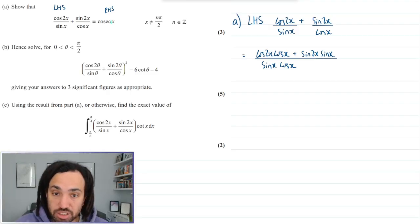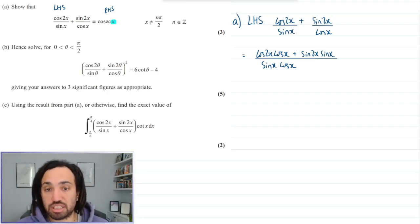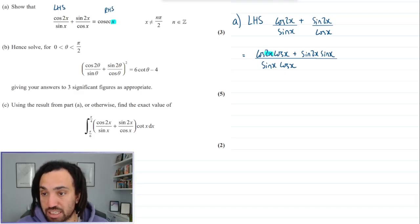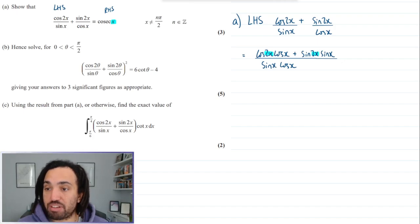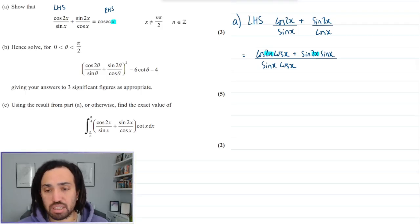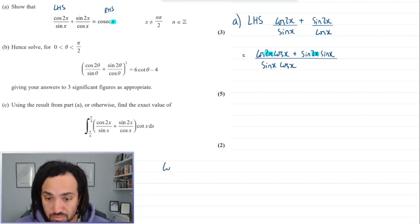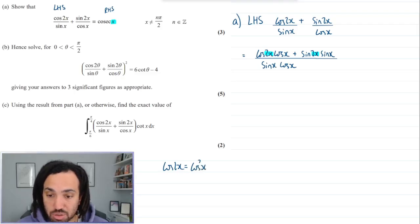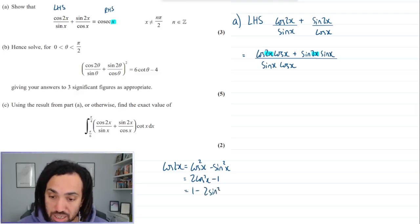Now if we look at the right hand side you can see that the input is just a single x, so really I want to be dealing with trig functions that have an input of just x. At the moment these ones here have an input of 2x so they're not particularly helpful. So let's use our double angle formulas to substitute those out. Cos 2x can be written as cos squared x minus sin squared x, or it could be written as 2 cos squared x minus 1, or 1 minus 2 sin squared x.